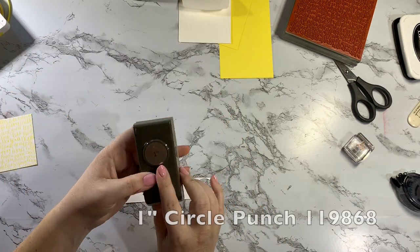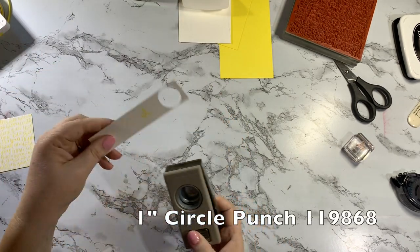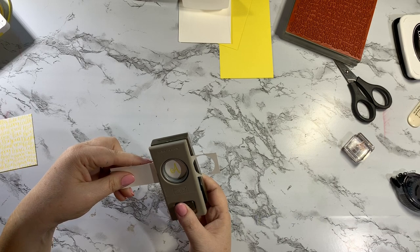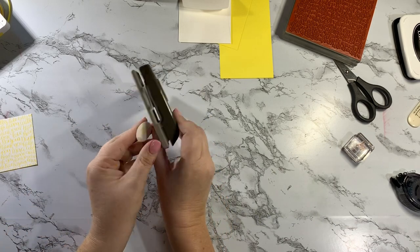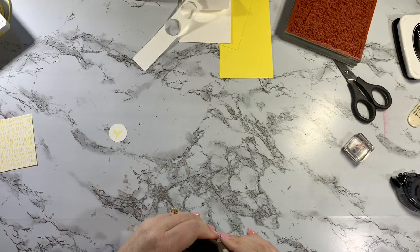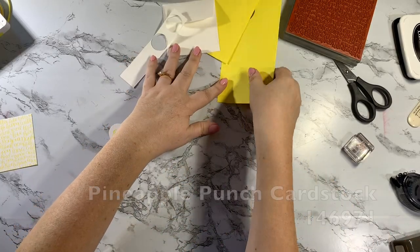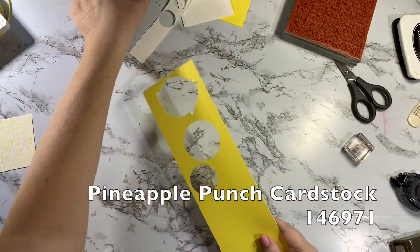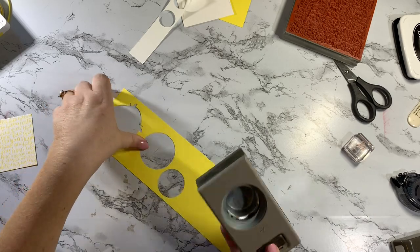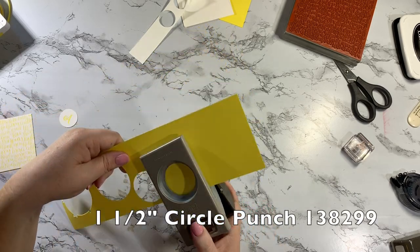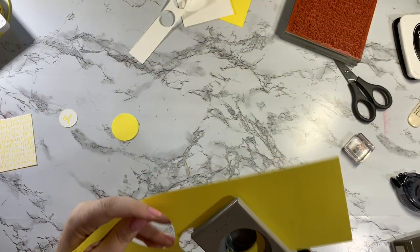And I'm gonna grab my one inch circle punch and punch that out. My little A. Okay, perfect. Then I have a scrap piece of pineapple punch cardstock and I'm gonna punch out the circle with the one and a half inch circle punch. There we go.